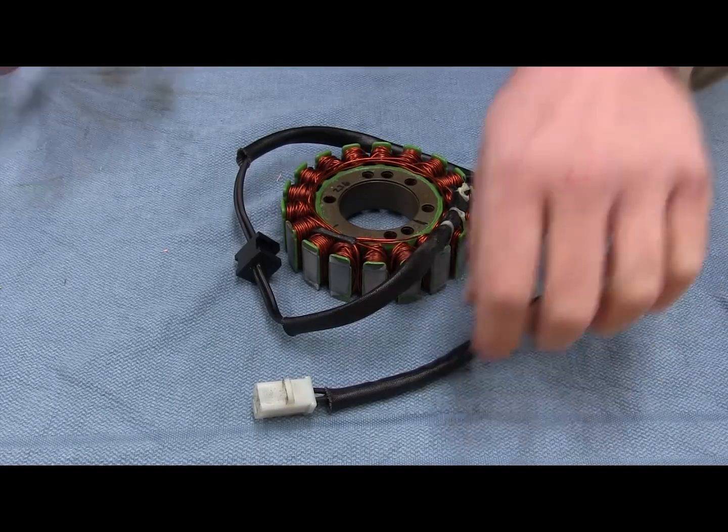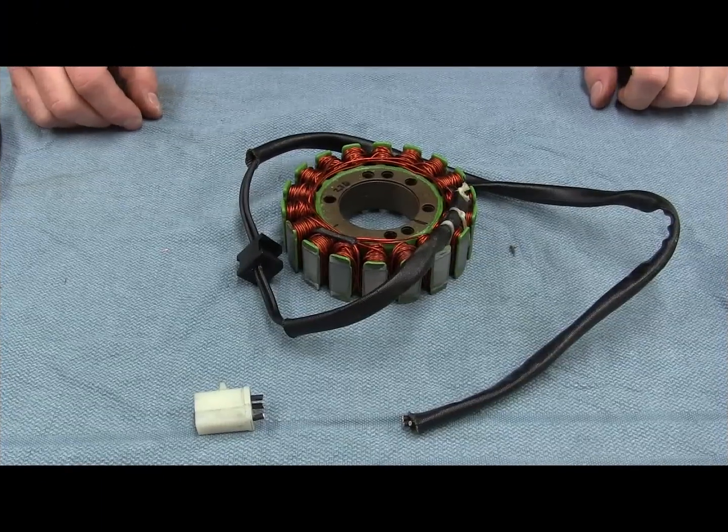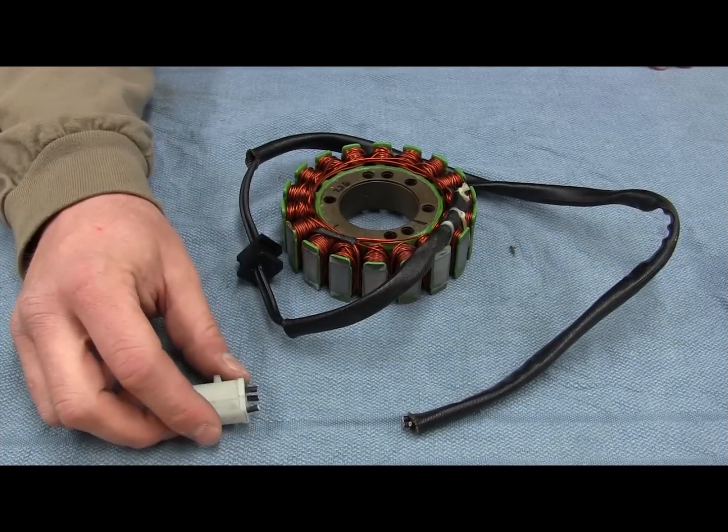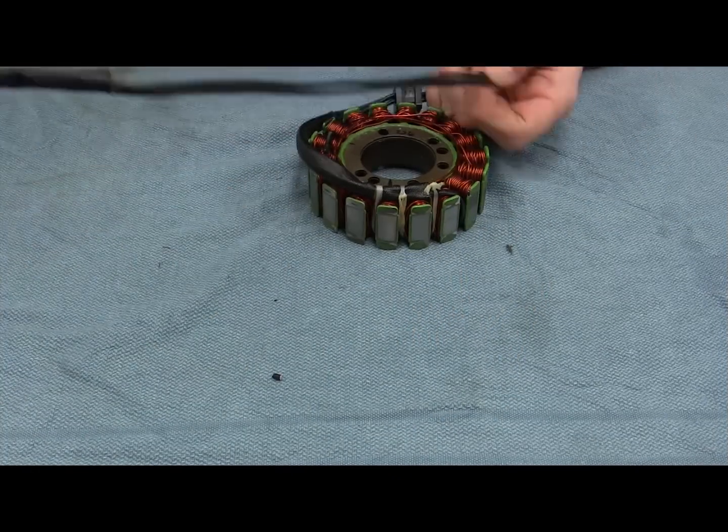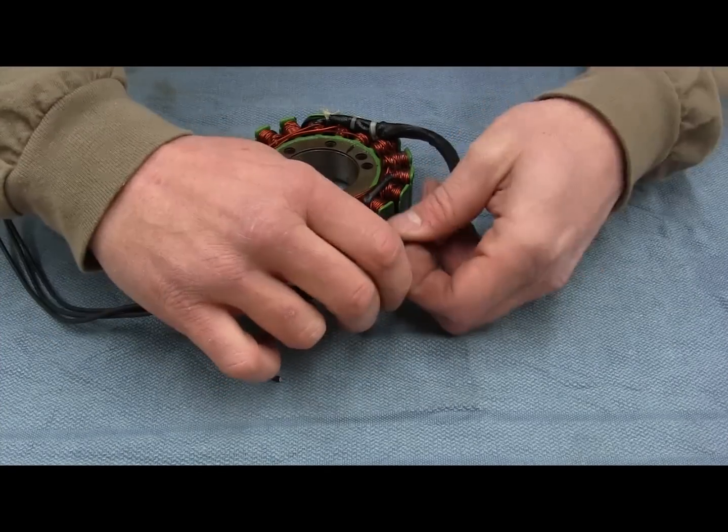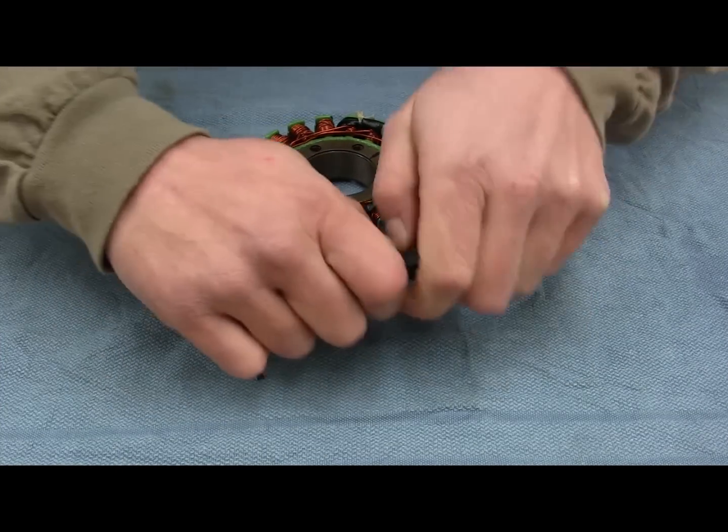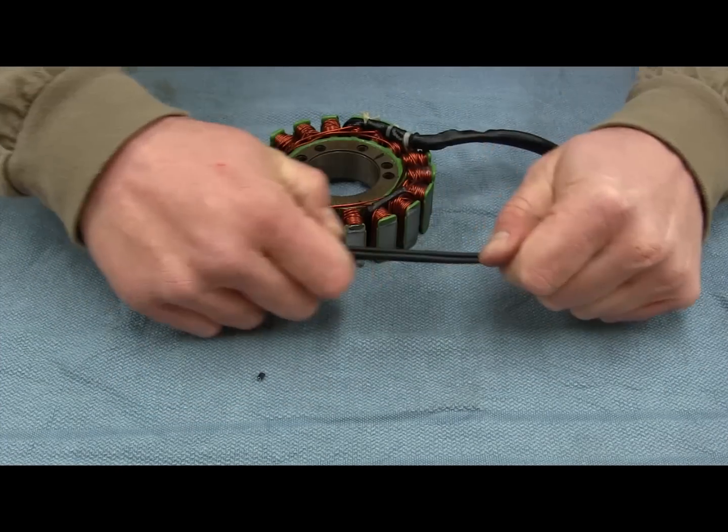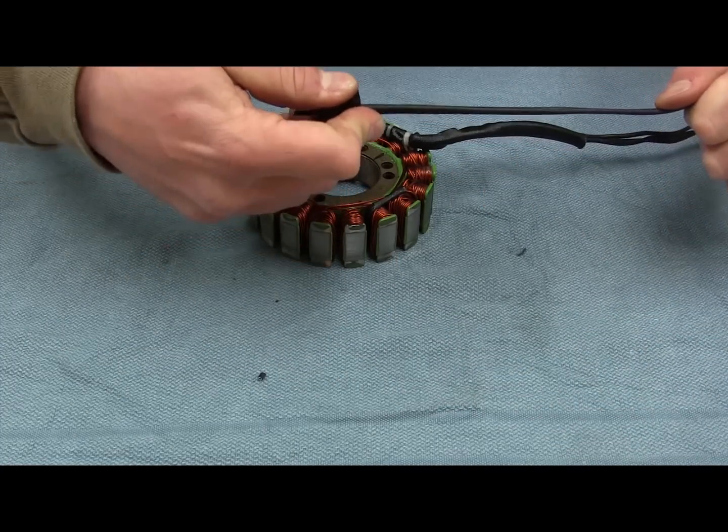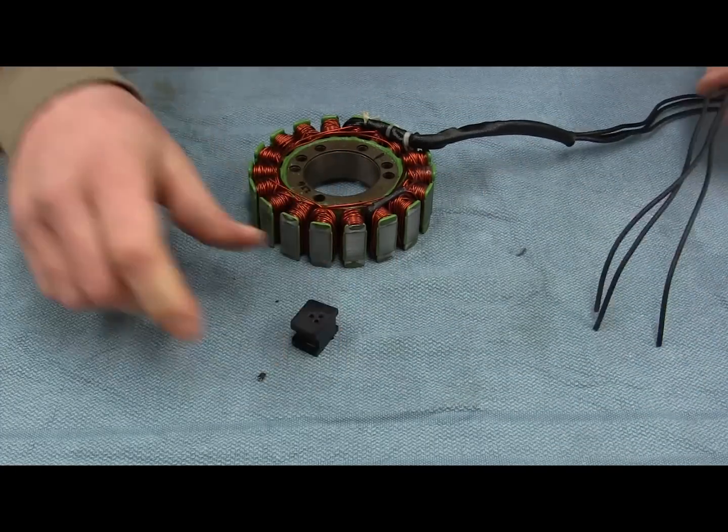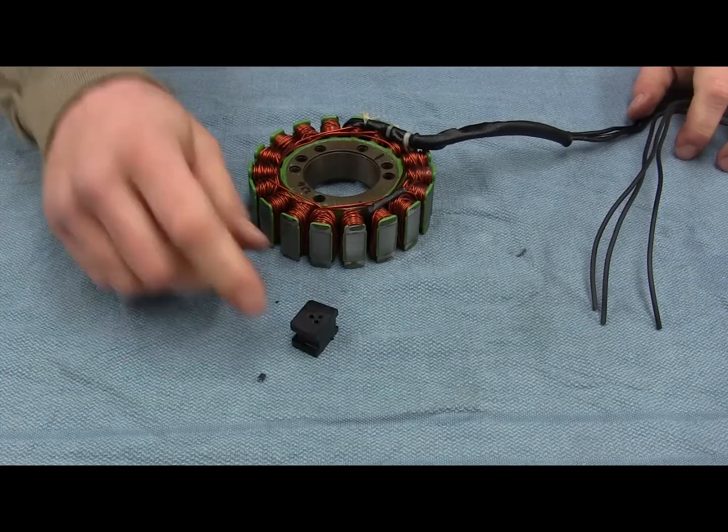First things first, you want to cut off the connector. Now that that's out of the way, you can just discard the old connector. Remove the sheathing. Next remove the grommet. This might take a little bit of force, but just slide the wires right through. Then you're going to want to save the grommet.